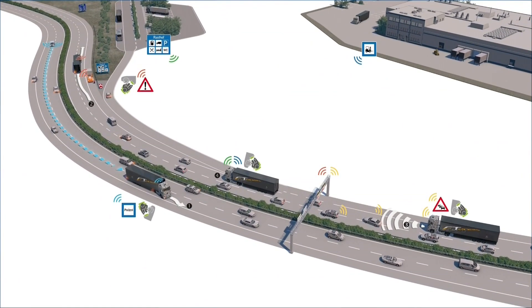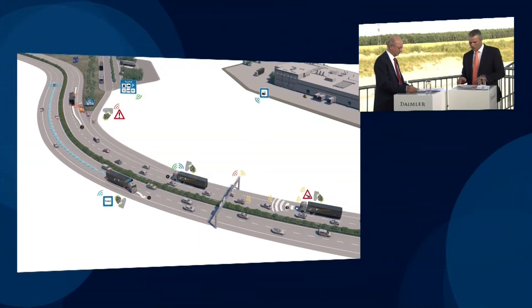Regarding communication between the truck and the environment: our vehicle communicates in a way the driver doesn't even notice. It continuously exchanges information about its own motion and the motion of other vehicles and trucks. There's going to be real-time communication between all networked vehicles about traffic congestion — and no traffic radio can do that, even the most accurate one.